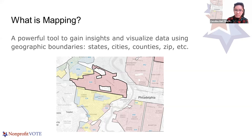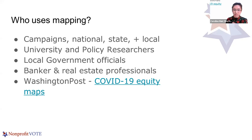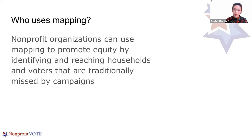So who uses mapping? Lots of people have been using mapping for a long time, including all levels of political campaigns — they use it to decide where resources go — university and policy researchers, local government officials, urban planning and zoning, banking and real estate professionals when valuing or lending, and news sites like the Washington Post. You may have seen powerful maps on health equity disparities of COVID-19. We're here to share ways nonprofits can use mapping in voter engagement to promote equity by identifying and reaching households missed by campaigns.